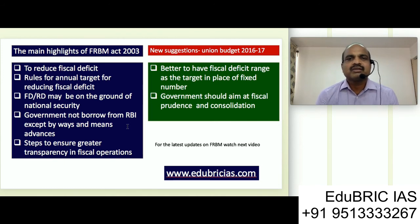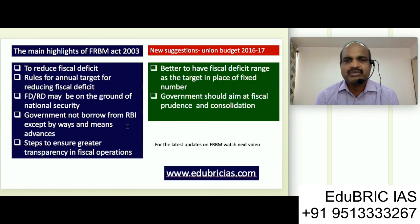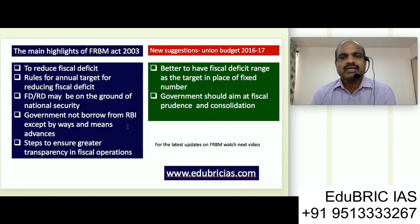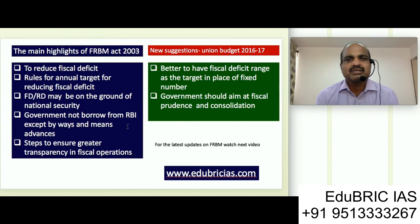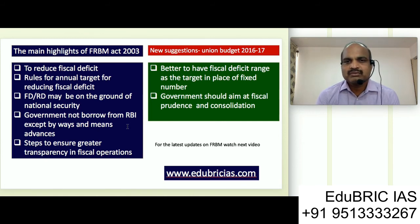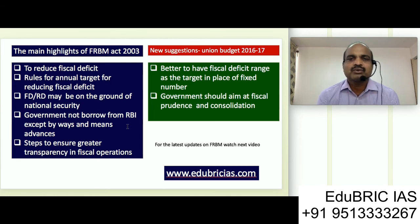The government decided it is better to reduce dependence on the RBI except through ways and means advances. We want to ensure that in all fiscal operations — that is in expenditure, revenue, and debt — there is transparency. There should be disclosure of all the items on which the government has incurred expenditure. The FRBM Act of 2003 was passed in 2003 and came into effect in 2004, with the objective of reducing revenue expenditure which was spiraling over the years.